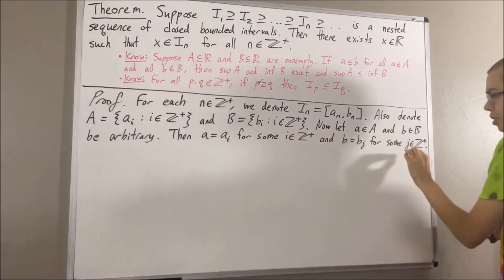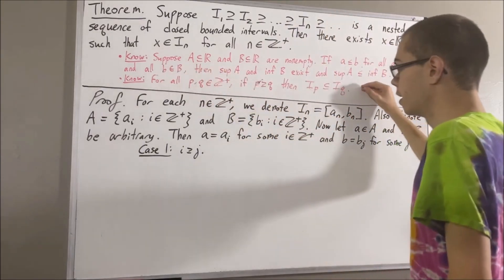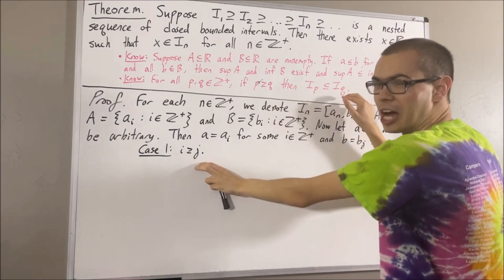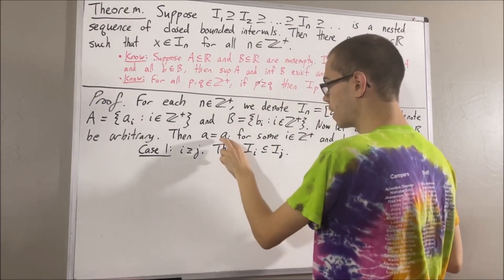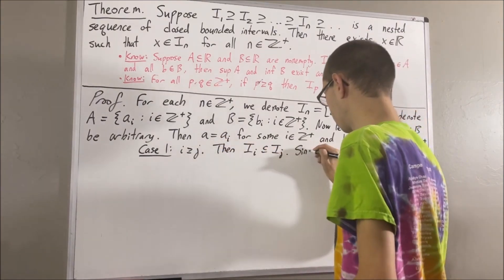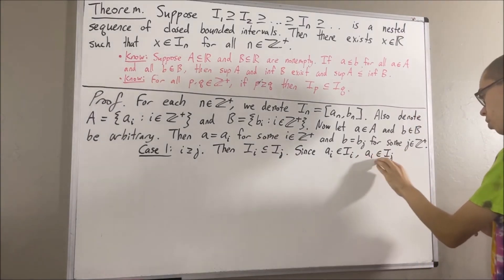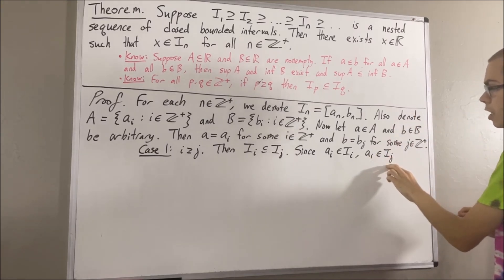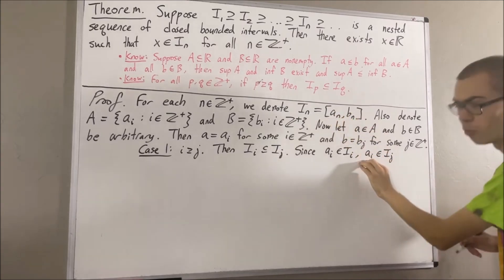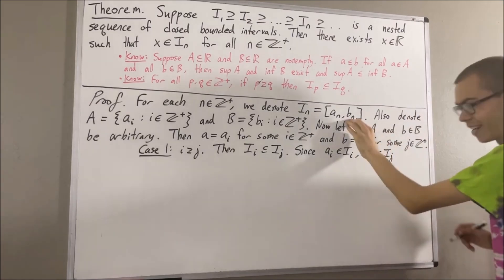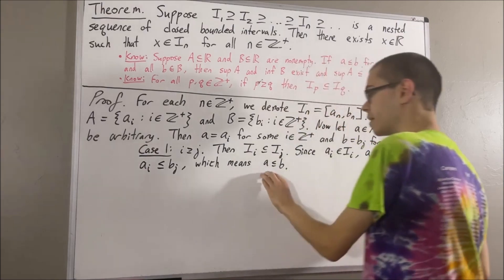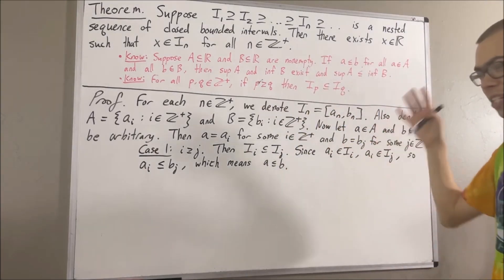Let's start with the case that i is greater than or equal to j. We can apply the nested sequence fact with p equal to i and q equal to j. Since i is greater than or equal to j, it follows that Ii is a subset of Ij. Now, ai belongs to the closed interval Ii, so ai must belong to the closed interval Ij. Since ai belongs to Ij, and Ij is the closed interval whose lowest value is aj and whose largest value is bj, we have aj is less than or equal to ai, which is less than or equal to bj. So in particular, ai is less than or equal to bj. But ai is really equal to a and bj is really equal to b. So a is less than or equal to b, which is exactly what we wanted to show. This completes the case where i is greater than or equal to j.